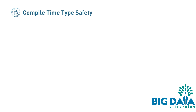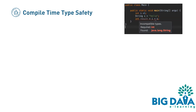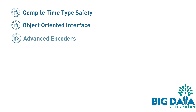First, Compile Time Type Safety — if we try to access a column which is not on the Dataset, then the API throws a compile time error. Second, it provides an object-oriented programming interface. Third, it also provides advanced encoders, which can provide on-demand access to individual attributes.